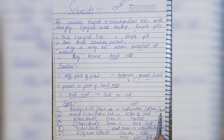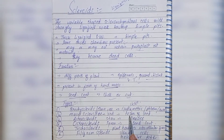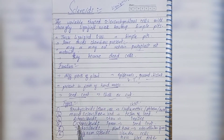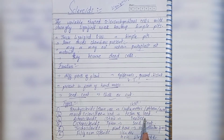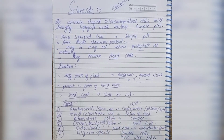Brachysclereids are found in phloem and cortex. Macrosclereids are rod-shaped. Astrosclereids are star-shaped. Osteosclereids are bone-shaped — seed bone shape.